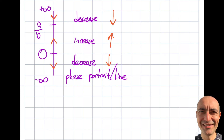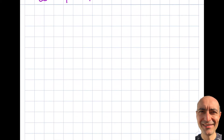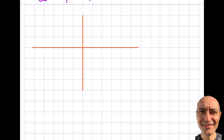This was a one-dimensional phase portrait or line. What about solution curves? We talked about this in the previous segment as well. Solution curves are 2D by nature. In this particular case, if I have a solution curve, let's go ahead and plot this. The y-axis will be p, and the x-axis will be t — in this case, y and x are replaced by p and t respectively.